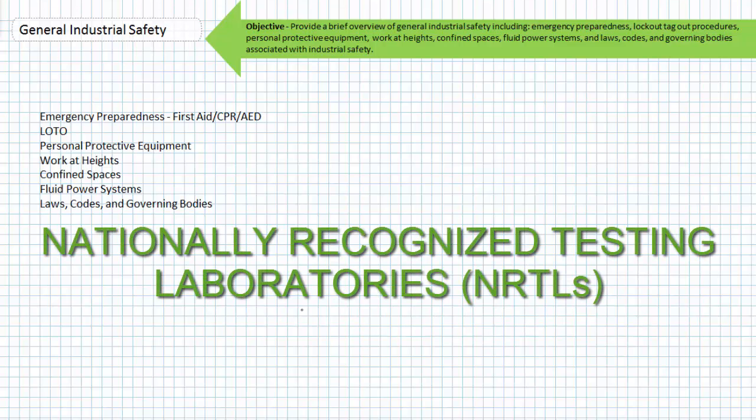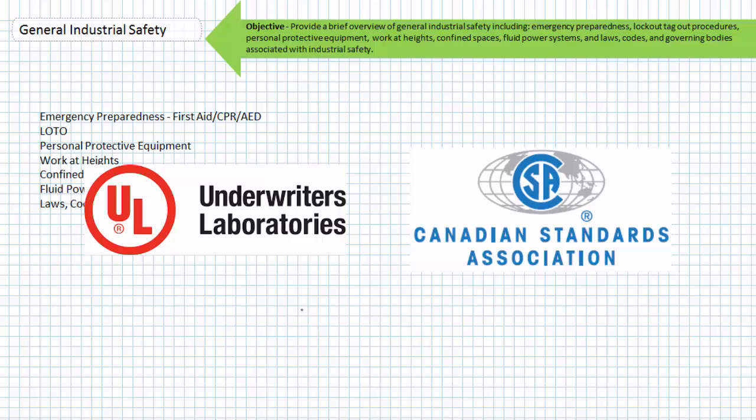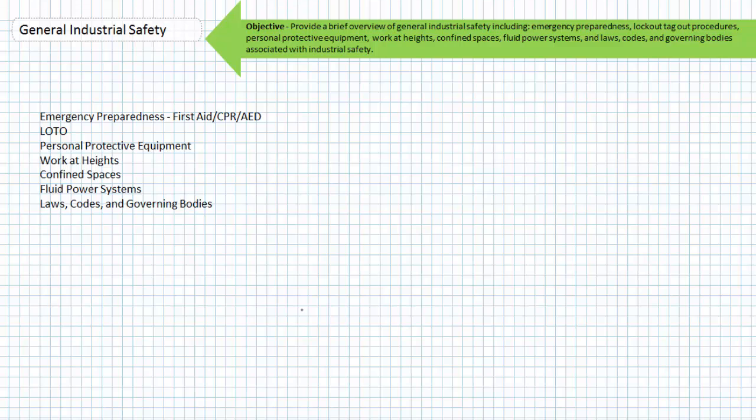The National Electrical Code sometimes known by its initials NEC is a set of rules published every three years by the National Fire Protection Association, NFPA. The purpose of the NEC is to safeguard people and property from electrical and fire hazards. For example article 430 covers motors, motor circuits and controllers, and article 690 covers solar photovoltaic systems.